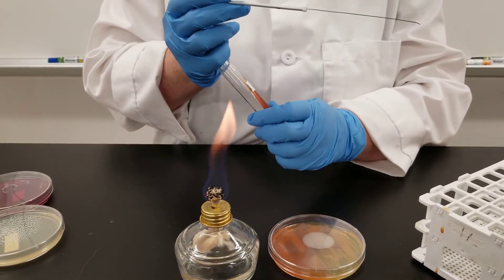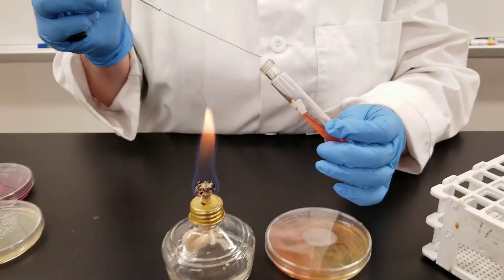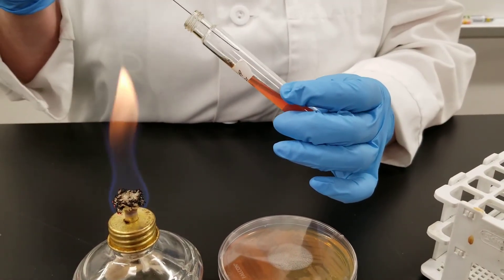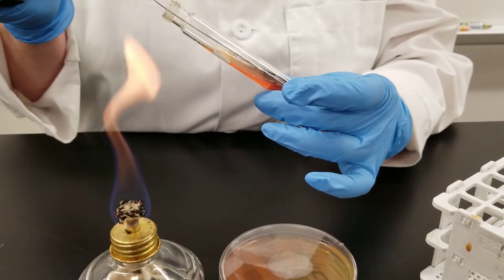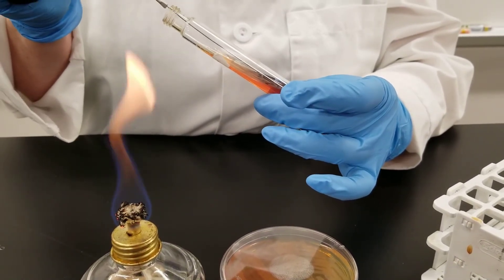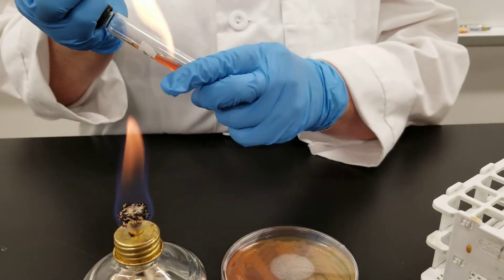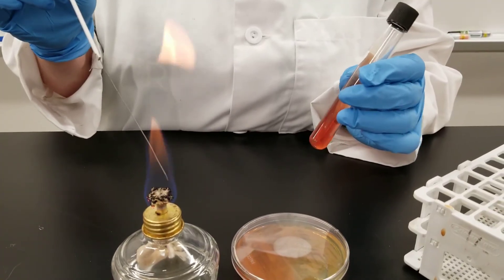Once again, flame our tube. You have already streaked along the slant. So hopefully you can see this. We are going to take the needle just straight in, down, back up. Flame the needle again.